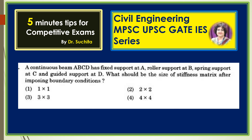At the roller support, since it is a roller it can have movement in the direction of the roller, and in addition to that there will be rotation, so there are two unknowns at roller support B. At the spring support there is a displacement in the direction of the spring, so there is one unknown at C. At the guided support there is also one unknown at D — guided support is like a roller support but without any rotational movement. So for this example the correct answer is 4 by 4.